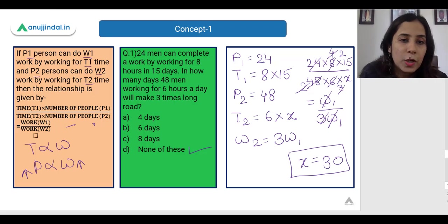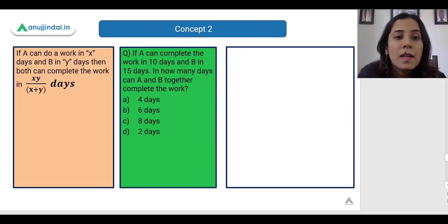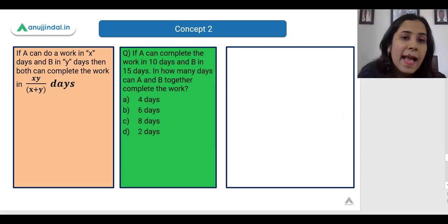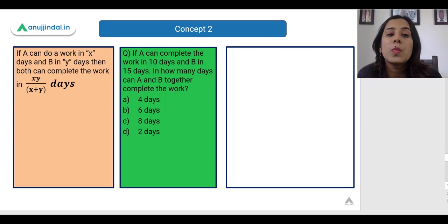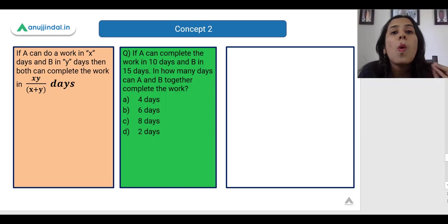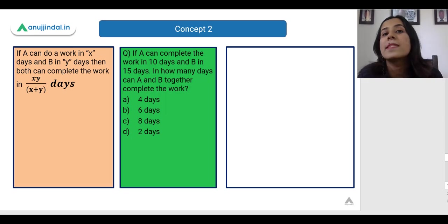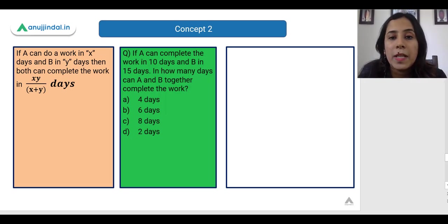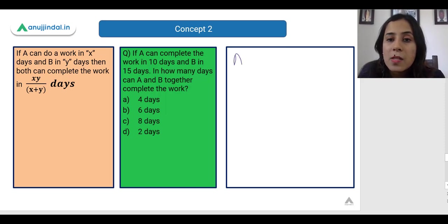Now let us see the second shortcut. If A can do a work in X days and B can do it in Y days, then together they can do it in (X × Y) / (X + Y) days. We are given the individual times for A and B, we multiply them and divide by their sum. For example, A can complete the work in 10 days.